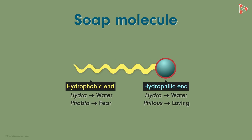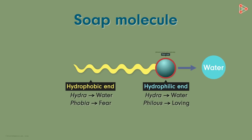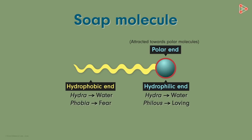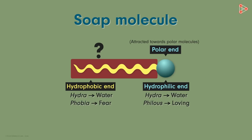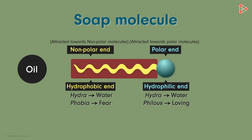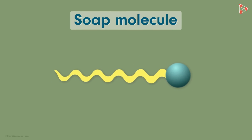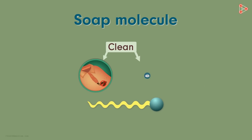Hence, this hydrophilic part, which gets attracted towards polar molecules like water, is also referred to as the polar end. And what will this region be called? You guessed it right — it's called the non-polar end, as it gets attracted towards non-polar molecules like oil, grease, and so on. Now that we know the typical structure of a soap molecule, let's understand how it helps us clean our clothes or vessels. See you in the next video!